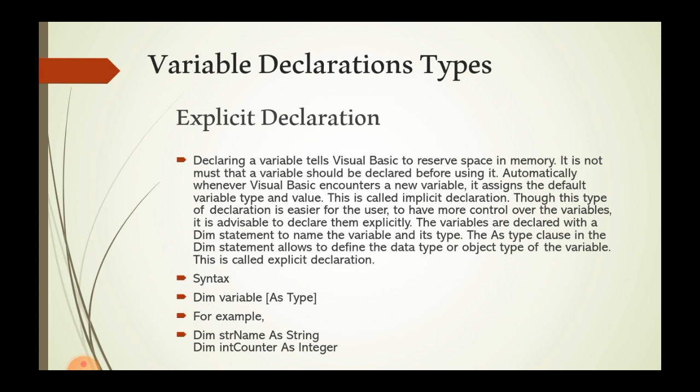Explicit declaration means telling Visual Basic to reserve space in memory. It is not required that a variable be declared before use — whenever Visual Basic encounters a new variable, it assigns the default variable type and value automatically. This is called implicit declaration.